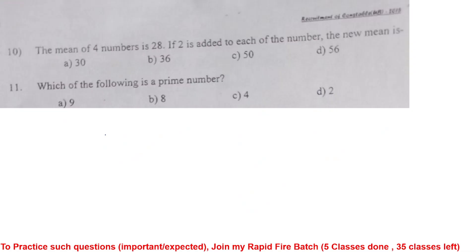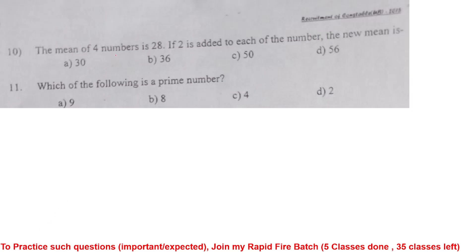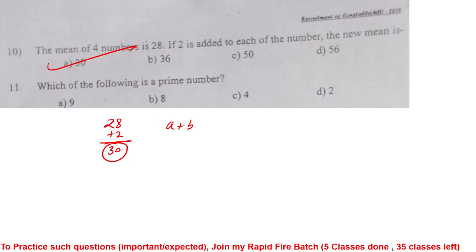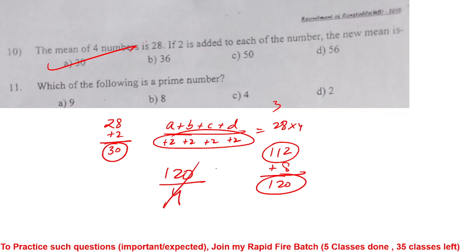Mean of four numbers is 28. If 2 is added to each number, the new mean: adding 2 to all numbers means the mean also increases by 2, so new mean = 28 + 2 = 30. Option A is correct. Verification: (A+B+C+D)/4 = 28, sum = 112; adding 2 to each gives sum 120, new mean = 120/4 = 30.